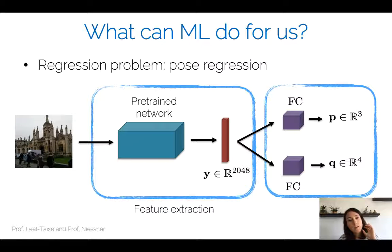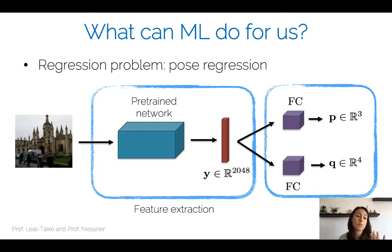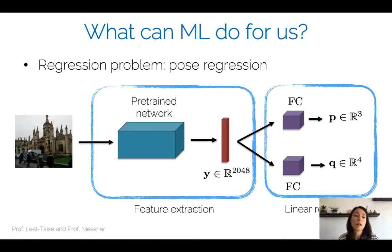We can conceptually divide the neural network into two parts: the feature extraction part, which processes the image and returns a 2048-dimensional embedding representing the image, and the linear regressor that projects this embedding into the output space we are interested in.